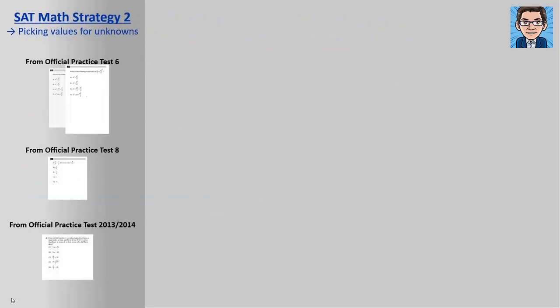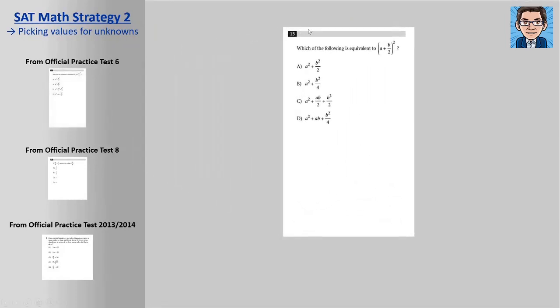Alright, so let's take a look at the first problem here. When solving a problem like this, we may know how to solve the problem. There are three advantages of picking values for unknowns. One is if you don't know how to solve the problem, it still gives you a way to be able to answer the question.